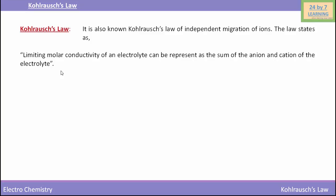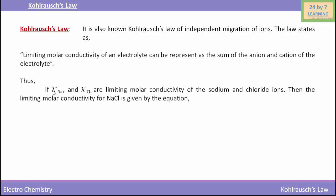This statement sounds very complicated, so let me make it easy. Here we are talking about limiting molar conductivity of an electrolyte. Taking the example of NaCl: if λ₀(Na⁺) and λ₀(Cl⁻) are the limiting molar conductivities of the sodium and chloride ions, then the limiting molar conductivity of NaCl is given by the equation — it equals the sum of the limiting molar conductivity of the sodium ion and the chloride ion.